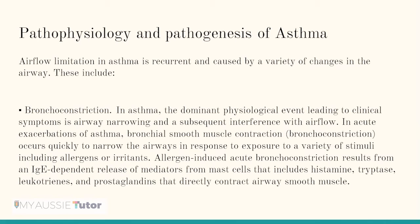The pathophysiology and pathogenesis of asthma: airflow limitation in asthma is recurrent and caused by a variety of changes in the airway. These include bronchoconstriction — in asthma, the dominant physiological event leading to clinical symptoms is airway narrowing and subsequent interference with airflow. In acute exacerbations, bronchial smooth muscle contraction causes bronchoconstriction in response to exposure to allergens or irritants. Allergen-induced acute bronchoconstriction results from an IgE-dependent release of mediators from mast cells including histamine, tryptase, leukotrienes, and prostaglandins that directly contract the airway smooth muscle.